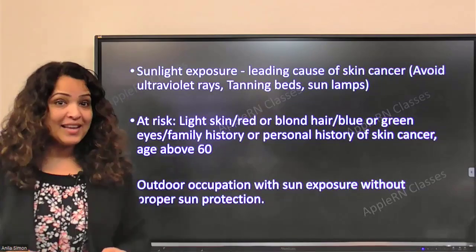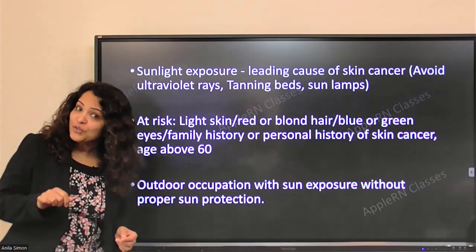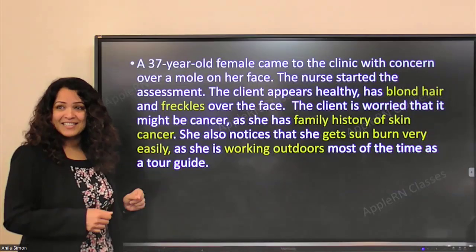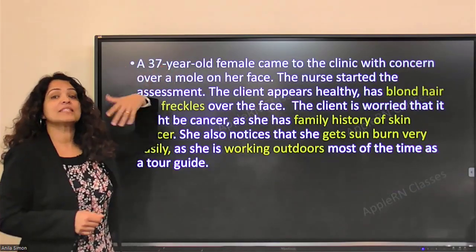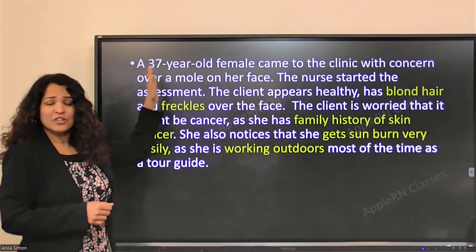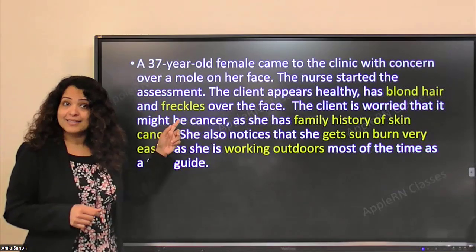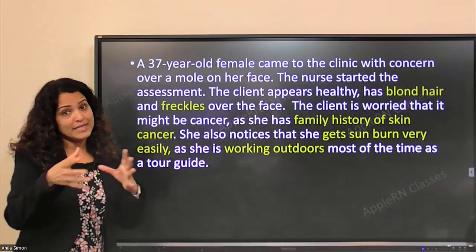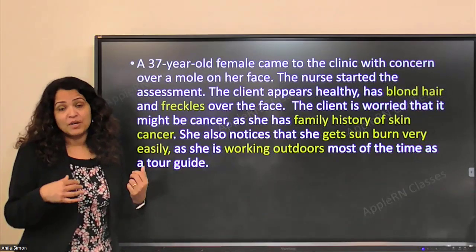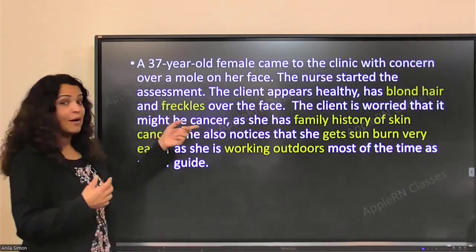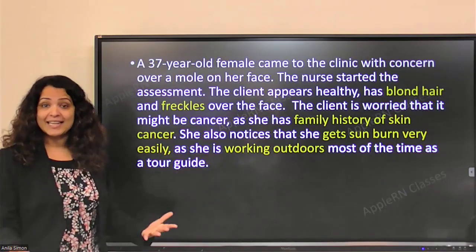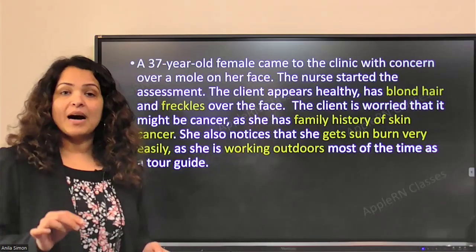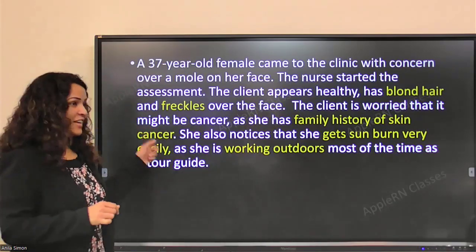Knowing all these things, what can you highlight as additional risk factors for skin cancer in this client? The age doesn't apply because we said it's mostly 60 or above, and she's not in that category. But blonde hair and freckles — that puts her at risk for skin cancer because it's very easy for them to get sunburned. And a family history of skin cancer, getting sunburned very easily, and working outdoors — those are the things you want to highlight, because the question is asking you to highlight them. Those will be your answers.